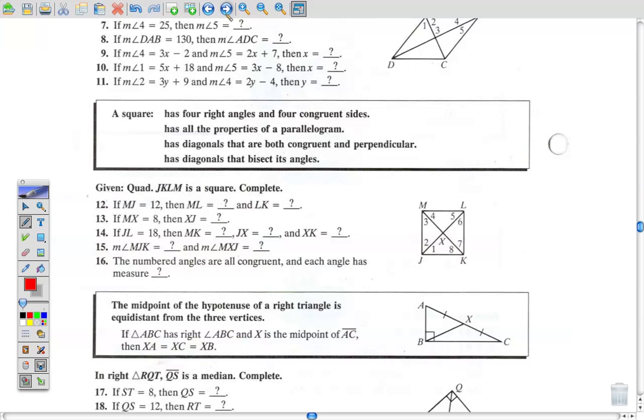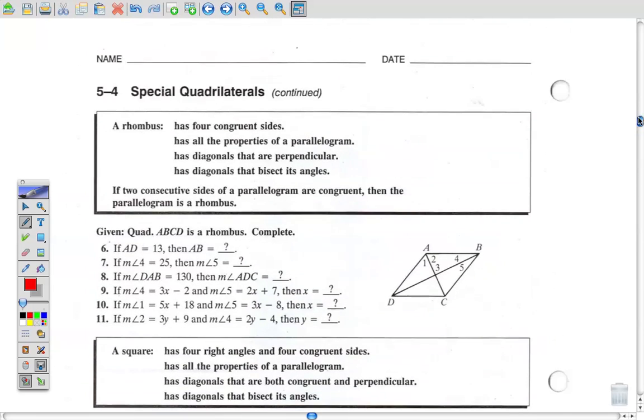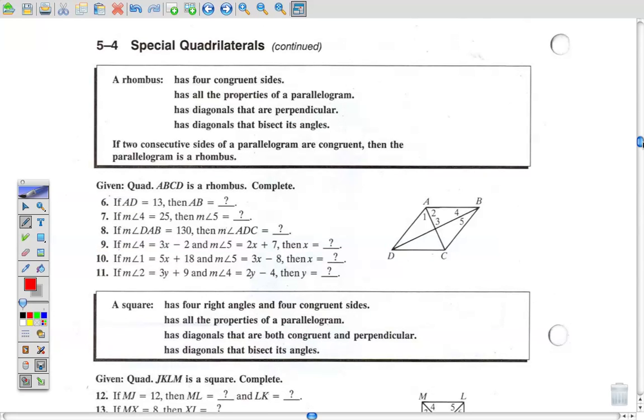All right, let's take a look on the other side of this and do one or two in each group. Now on six through 11, you've got a rhombus. Now what's a rhombus have? Four equal sides. It has the properties of a parallelogram. The diagonals are perpendicular, and the diagonals bisect its angles. So for example, number six, if AB is 13, what's AB? Well, you have four congruent sides, so it has to be 13. Those are some of the basic ones. Use your notes here and your sheet here to do these.